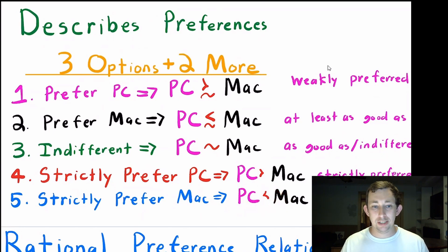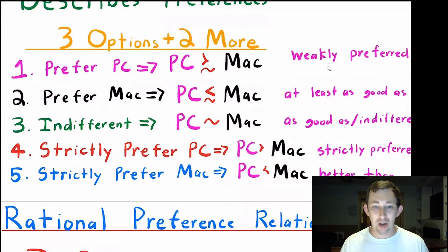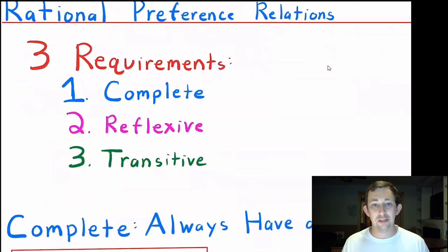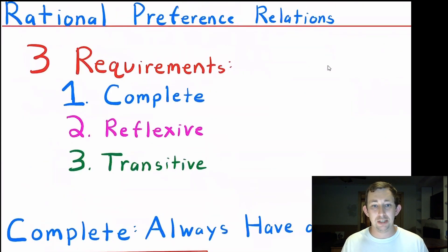Now that we know what a preference relation is, what makes a preference relation rational? Well, there are three requirements. You need to be complete, you need to be reflexive, and you need to be transitive.